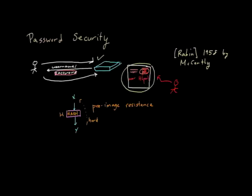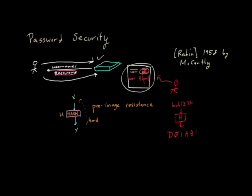So imagine you had a password. Let's say the password was bob1234, and it's not a particularly good password, but let's say that was your password and you applied the cryptographic hash function to it, you might get some really convoluted-looking output like d01ab3, something like that. I don't know if I'm making this up, but obviously this looks nothing like the original input.